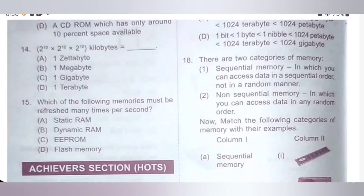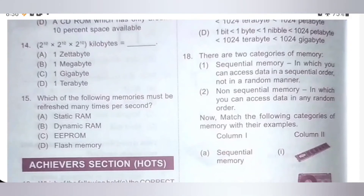Fifteenth question. Which of the following memories must be refreshed many times per second? A) static RAM; B) dynamic RAM; C) EEPROM; D) flash memory. Dynamic RAM is a type of memory typically used for data or program code that a computer processor needs to function. It is used in personal computers, workstations and servers and needs to be refreshed periodically. Option B is the correct answer.